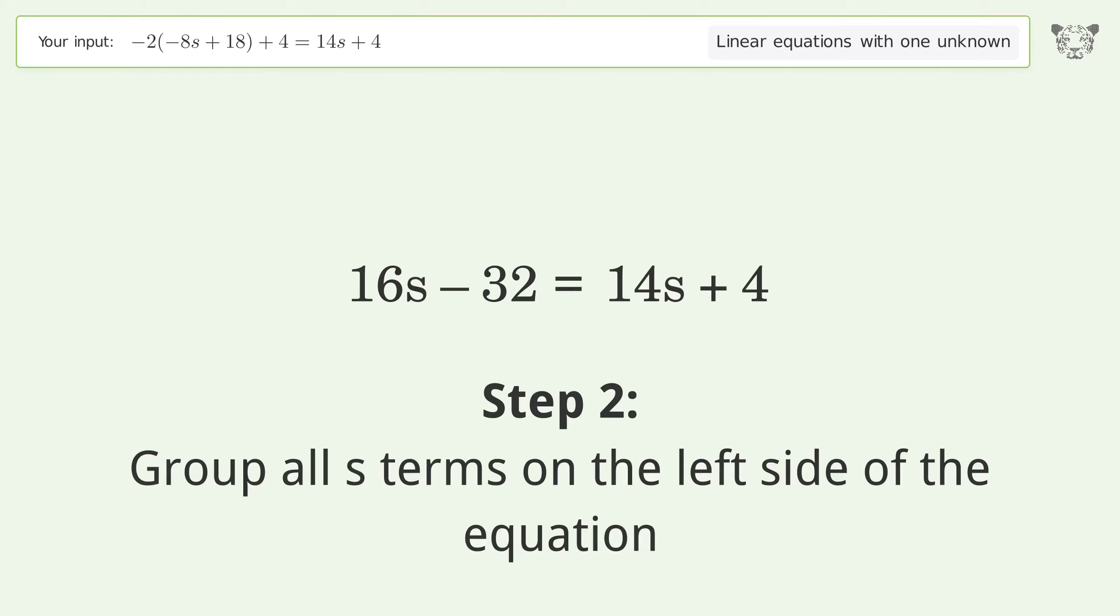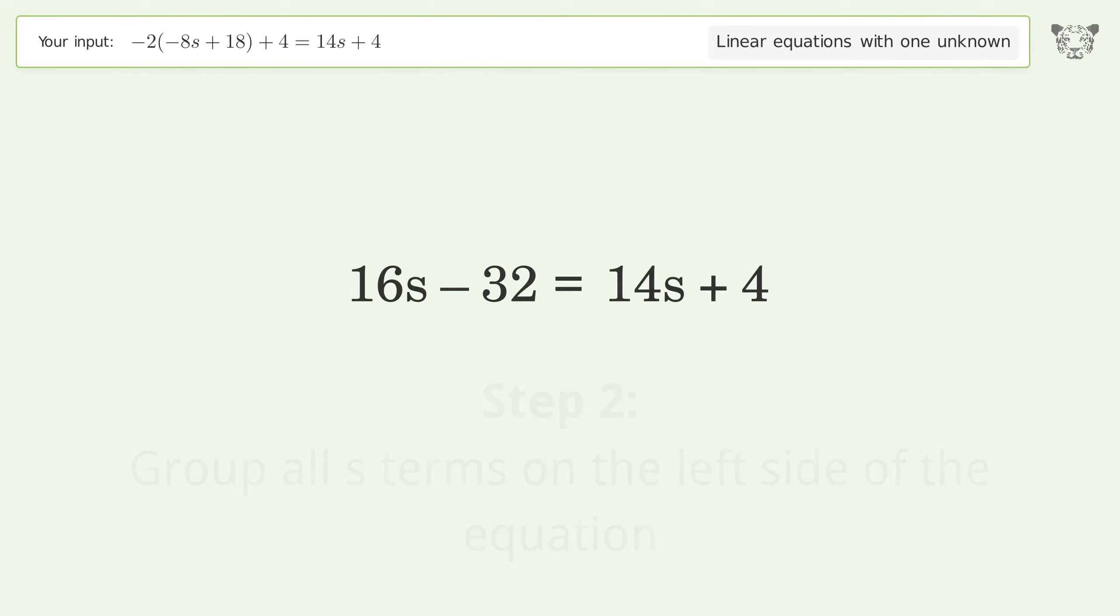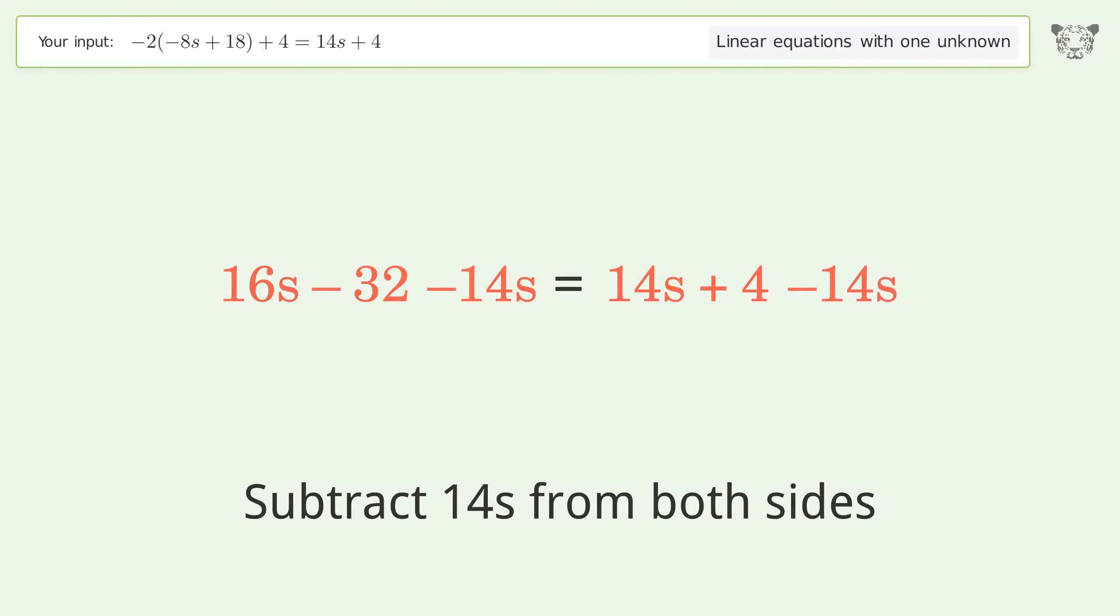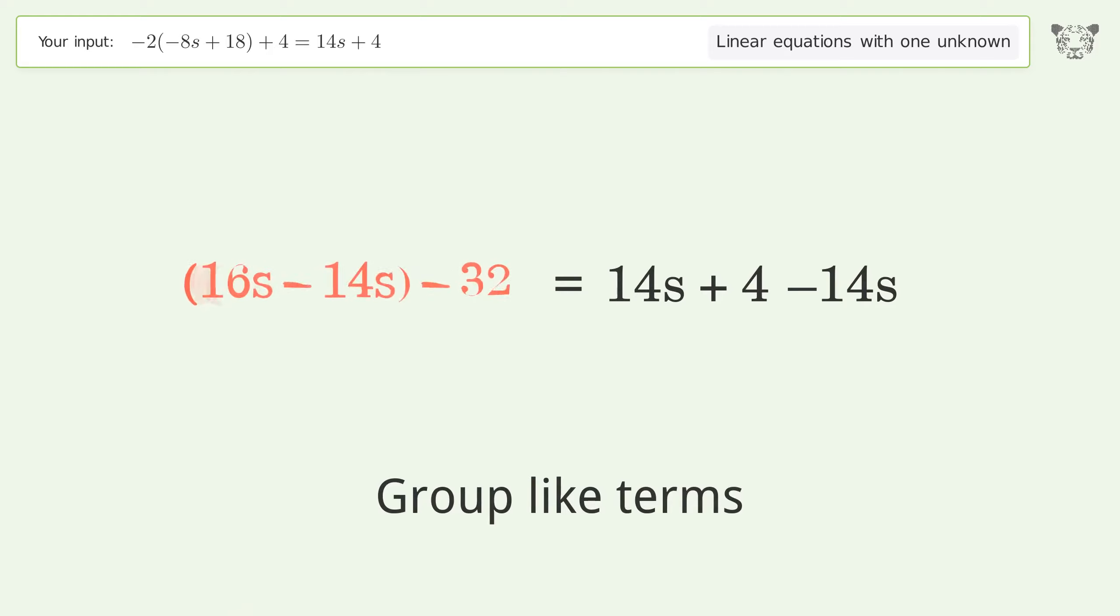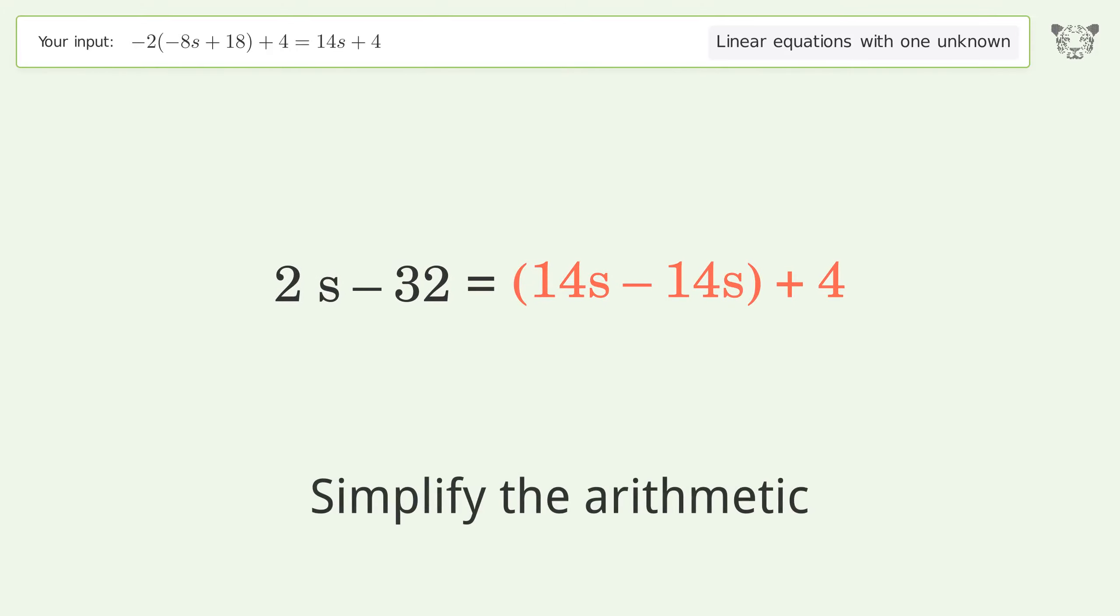Group all s terms on the left side of the equation by subtracting 14s from both sides. Group like terms and simplify the arithmetic.